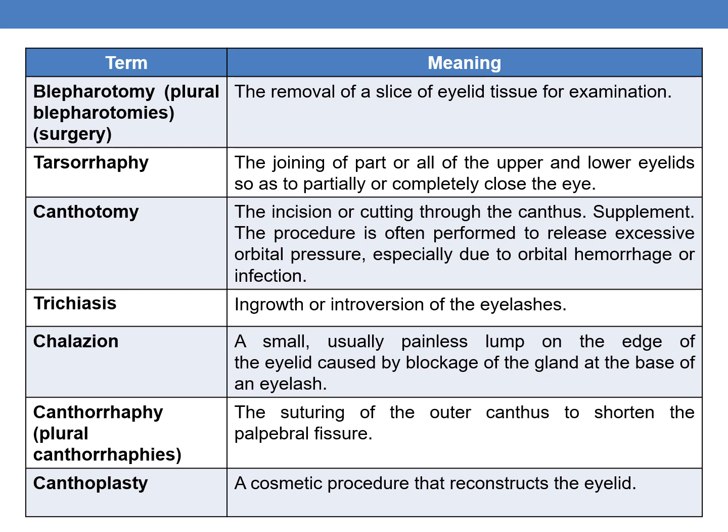The next term is tarsorrhaphy. It is the joining of part or all of the upper and lower eyelids so as to partially or completely close the eye. Tarsorrhaphy is a procedure of joining part or all of the upper eyelid so as to partially or completely close the eyes.